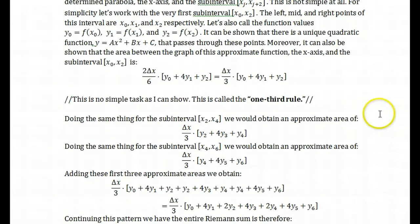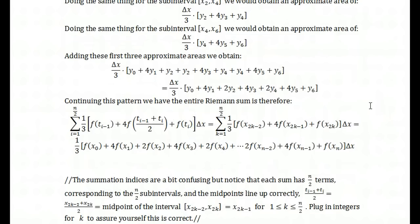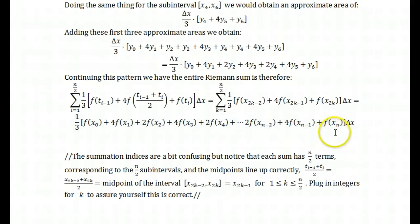From the note handout, the formula is delta x over 3 times y-sub-0, plus 4 times the value at the midpoint, plus the right endpoint — where for the subinterval from x-sub-0 to x-sub-2, the midpoint is x-sub-1. You do that for each subinterval and add them all together. Adding them all up gives the full Simpson's rule formula: one-third times the function value at the first partition point, plus 4 times the next, plus 2 times, plus 4 times, plus 2 times — continuing that pattern until the very end, where you take that function value once. This pattern arises from overlapping left and right endpoints shared between consecutive subintervals.